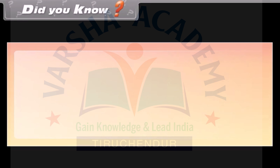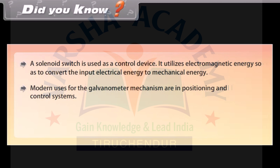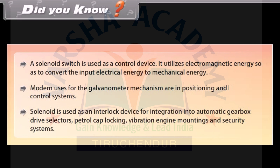Did you know? A solenoid switch is used as a control device, utilizing electromagnetic energy to convert electrical energy to mechanical energy. Modern uses for the galvanometer mechanism include positioning and control systems. Solenoids are also used as interlock devices integrated into automatic gearbox drive selectors, petrol cap locking, vibration engine mountings, and security systems.